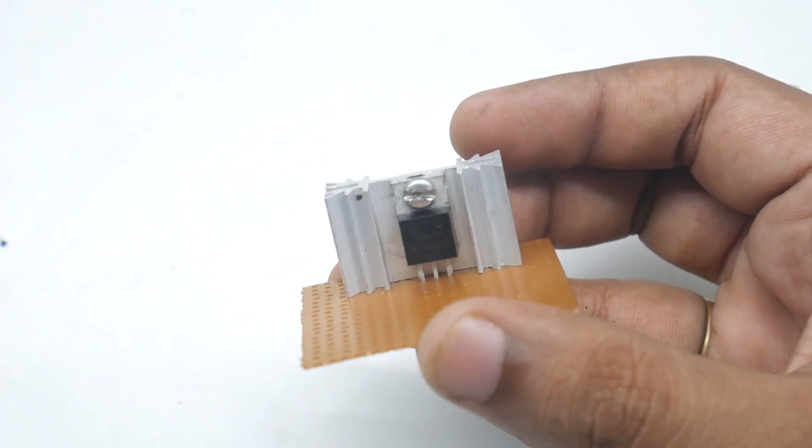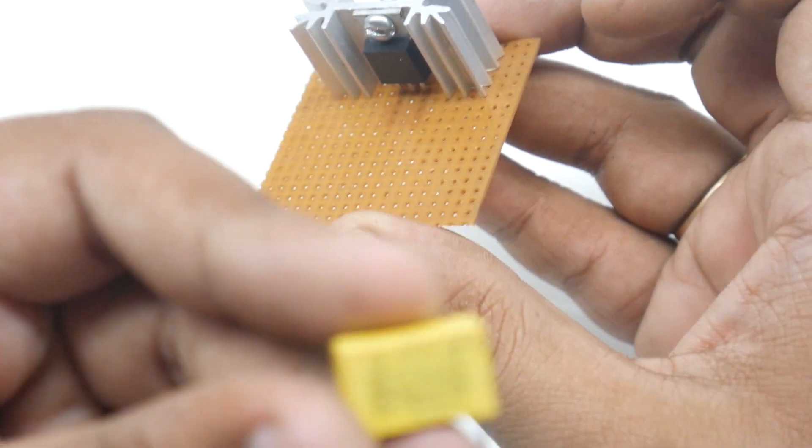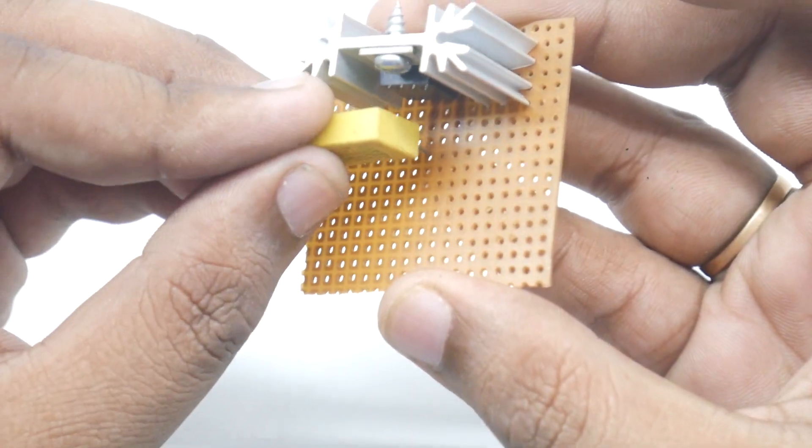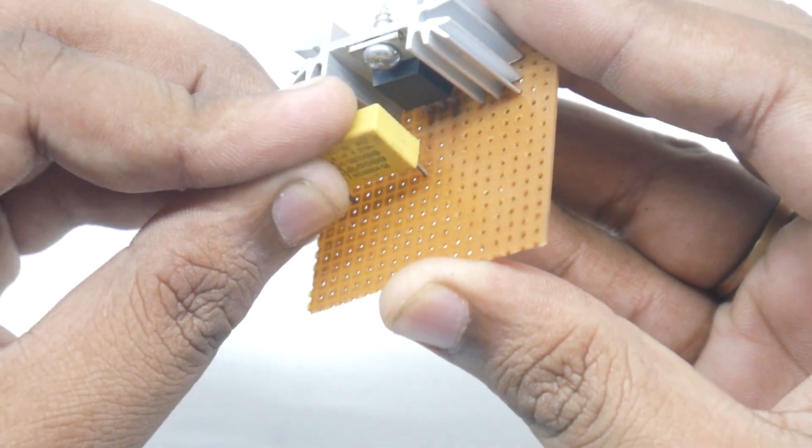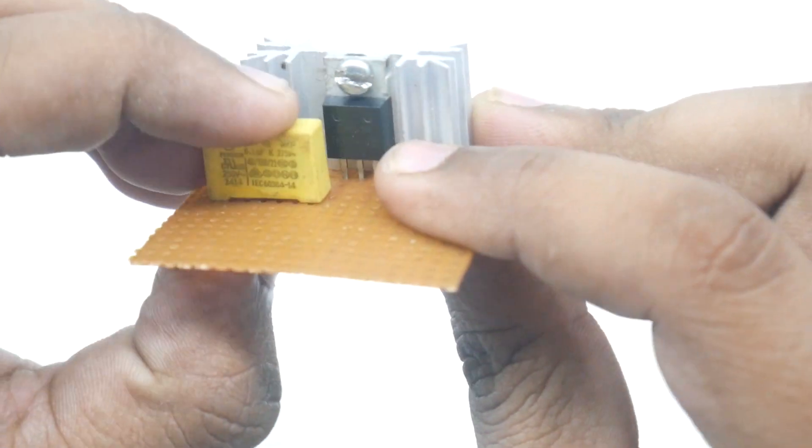Now we have soldered our BT136. Now this is our capacitor, we will just connect it here like this from the first pin. The capacitor is connected like this.